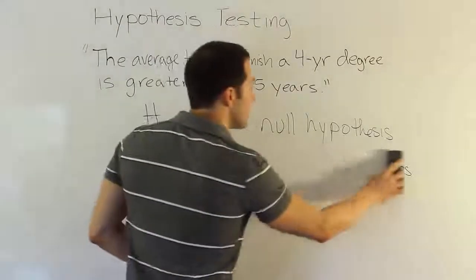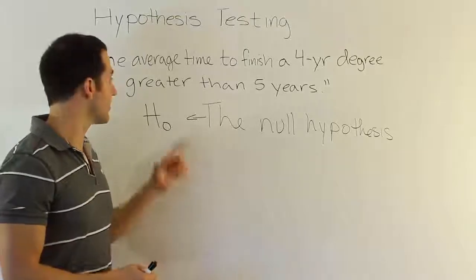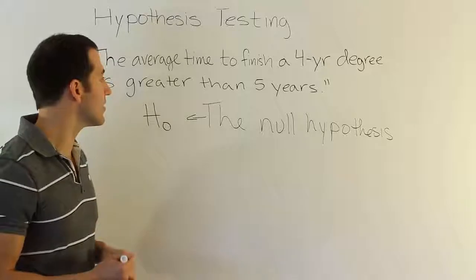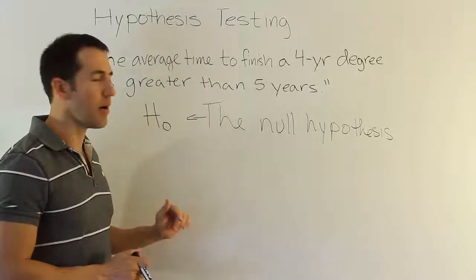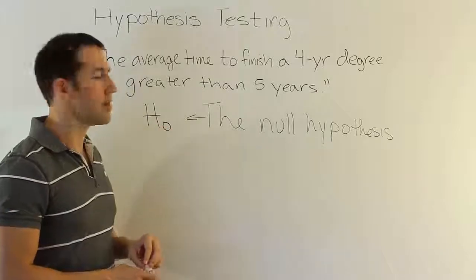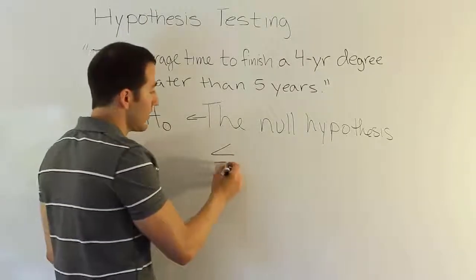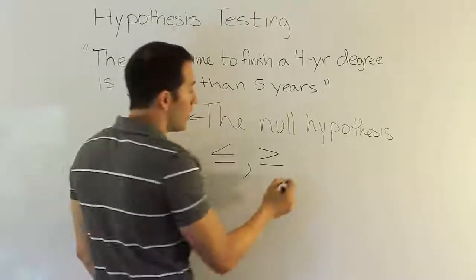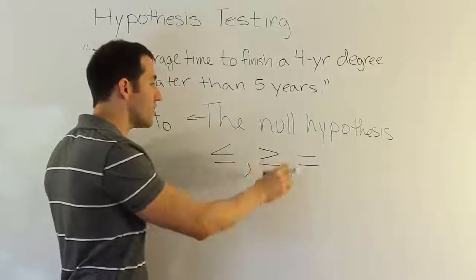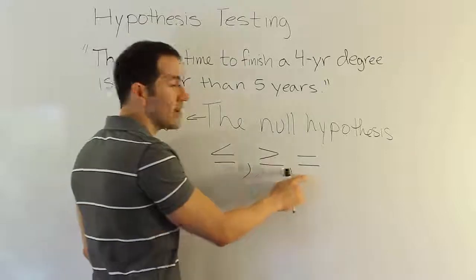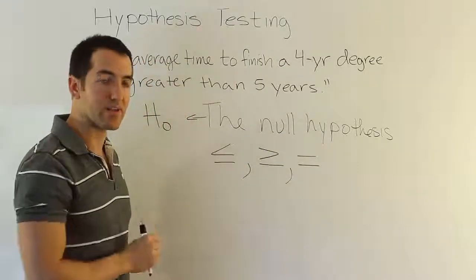The null hypothesis uses one of the following three symbols: it'll either use less than or equal to, greater than or equal to, or it will use equal to. That's the symbols that the null hypothesis uses, period, end of story. It has to have one of these three symbols, just one. Notice that each of them has the condition of equality. Each one has an equal sign as a part of it. So the null hypothesis has that quality that there's always equality in it. That's very important.